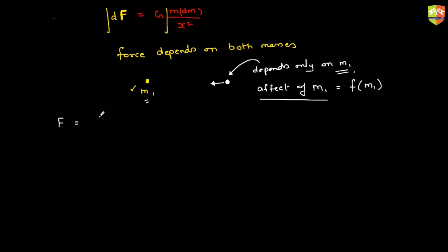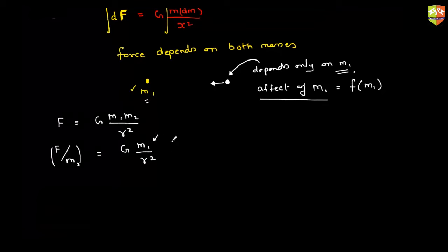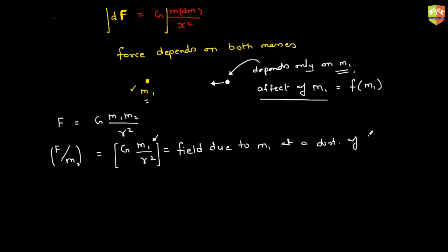The force is G·m1·m2 / r², so force divided by m2 gives G·m1 / r². Force per unit mass is a function of only m1. This expression G·m1 / r² can be referred to as the gravitational field due to m1 at a distance r. If field is known at a location and you place mass m, the force is simply field times m, since field is force per unit mass.